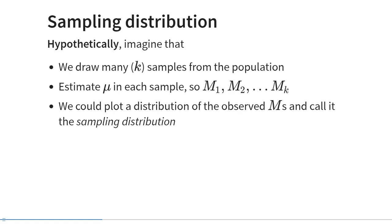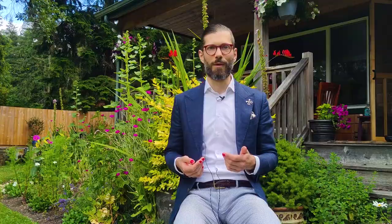It's a hypothetical distribution of the statistics we would calculate in many samples. And now I want to introduce you to a fundamental concept in statistics that allows us to perform inference on population parameters, and that is the central limit theorem. Central limit theorem proves that as the number of hypothetical samples that we could draw increases, this sampling distribution starts to resemble a normal distribution.